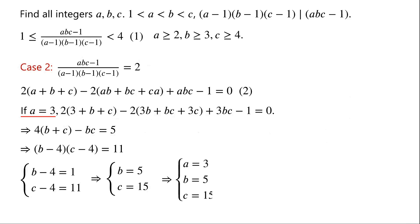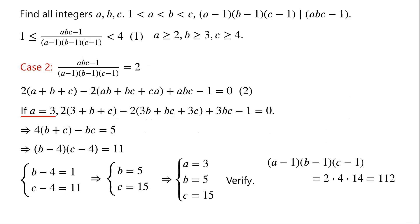So a = 3, b = 5, and c = 15. Now we verify: (a-1)(b-1)(c-1) = 2 × 4 × 14 = 112. And abc - 1 = 3 × 5 × 15 - 1 = 224.